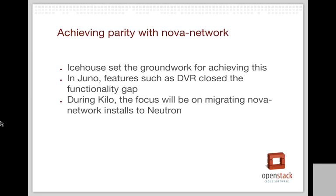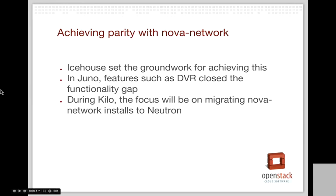One of the first things I wanted to highlight is parity with Nova Network. This work has been ongoing for a couple of cycles. We started in Ice House, setting the groundwork, then continued in Juno where DVR really closed the functionality gap between Neutron and Nova Network. During Kilo, we're going to work on migrating Nova Network installs to Neutron. There's also work around the edges — DVR is likely to have VLAN support, whereas in Juno it only had tunnel network support.